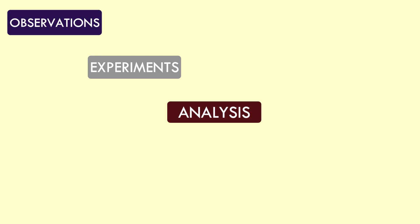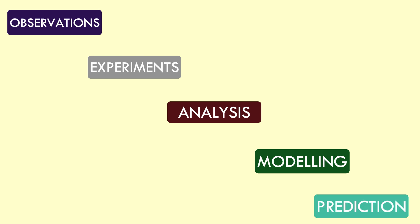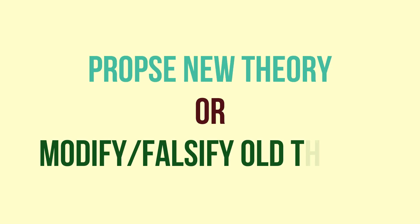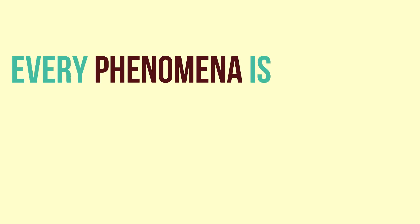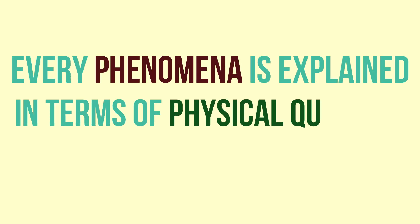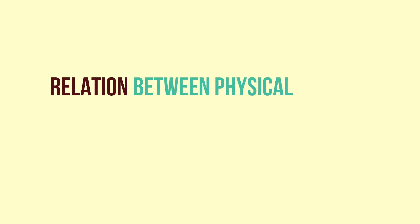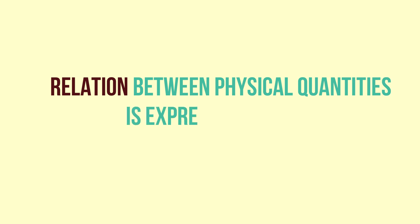The scientific process of discovering the laws involves a series of interconnected steps: careful observation, controlled experimentation, detailed analysis both qualitative as well as quantitative, building a mathematical model, and finally predicting the outcome of a phenomena. When studying a particular phenomena, scientists define and measure the physical quantities related to that phenomena, then find how these physical quantities change with respect to one another.